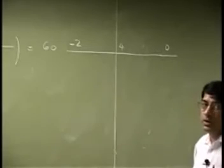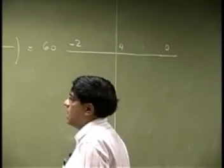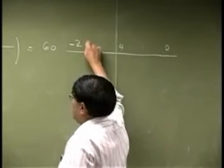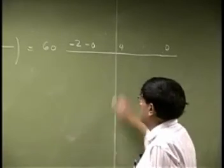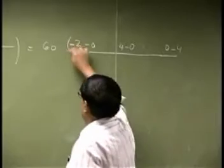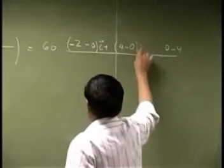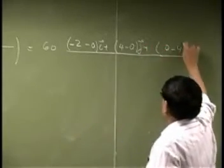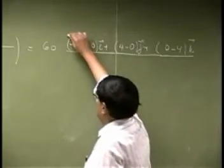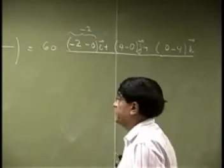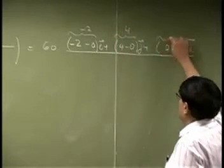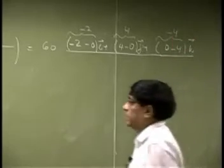Those are the coordinates of the tip of the vector running from C to D. Then you subtract the tail which happened to be C, so you go negative 0, negative 0, and negative 4. This component is going to be negative 2, this component is going to be positive 4, and this component is going to be negative 4.